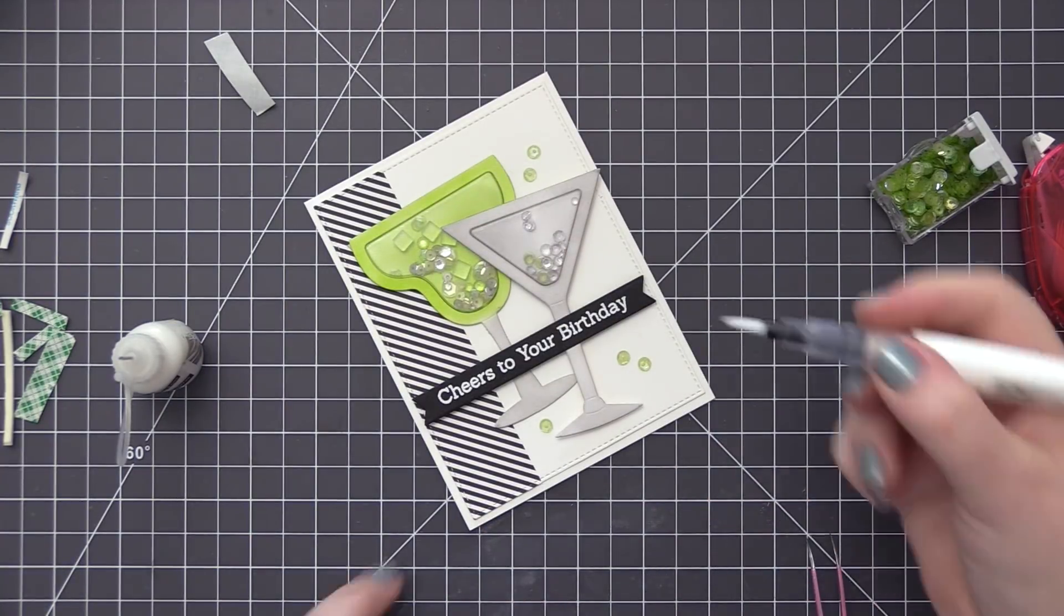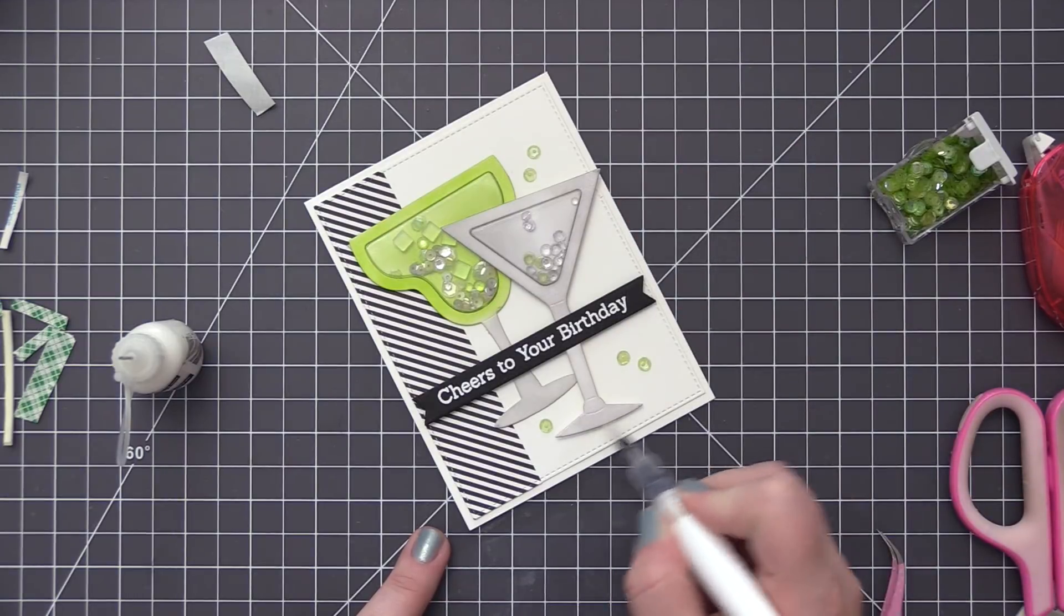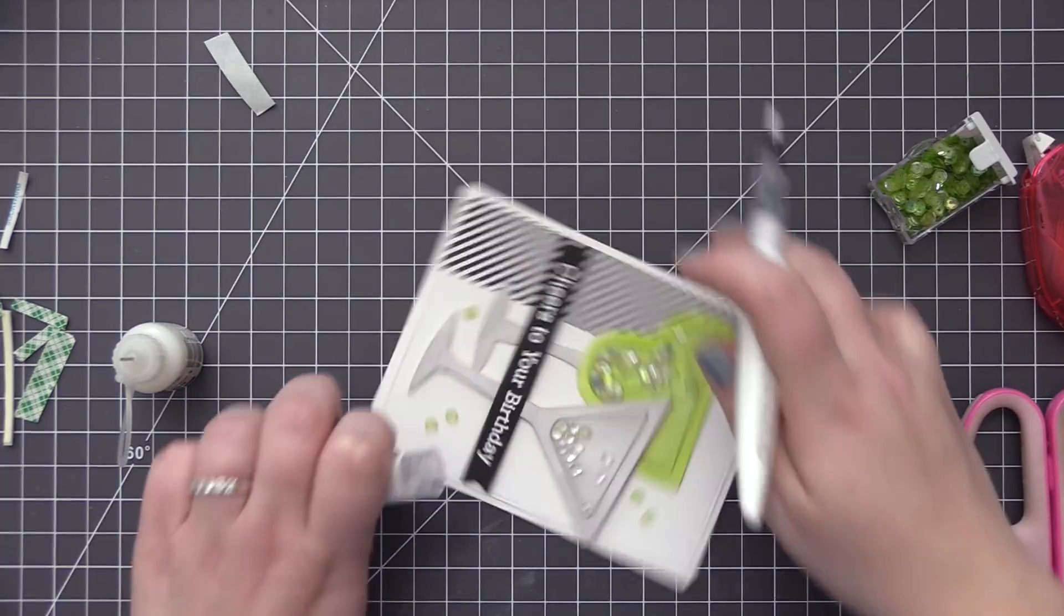And then I'm also going to use my Nuvo glitter pen and add glitter all the way around that whole entire martini glass. It just really gives it a lot of sparkle and shine and really adds to the overall design of the card.